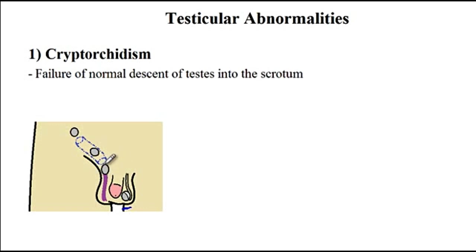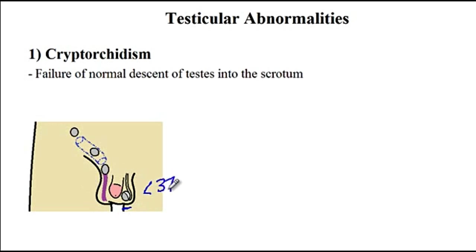The problem with this condition is that spermatogenesis requires a temperature of less than 37 degrees C, which is available in the scrotum. There is more air circulation around the scrotum, so the temperature is less than 37 degrees C. But inside the abdomen the temperature is about 37 degrees C, so spermatogenesis cannot happen in testicles that have not properly descended.